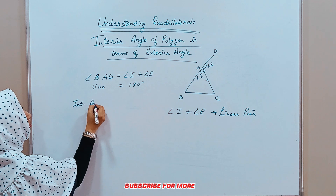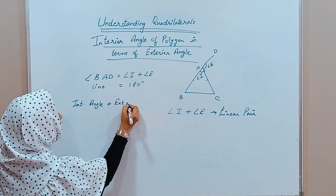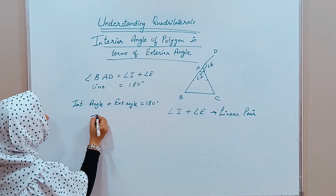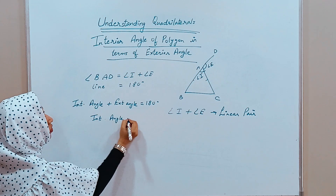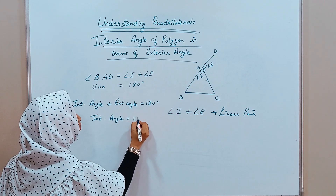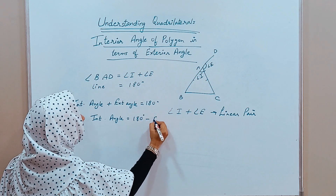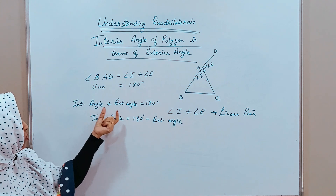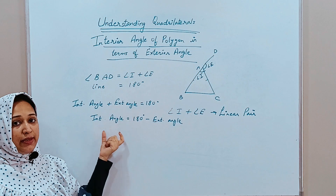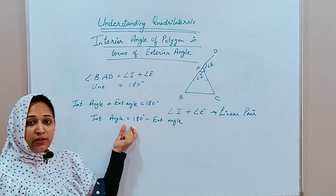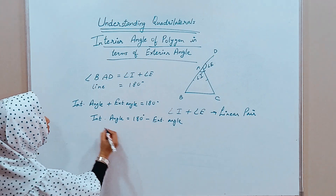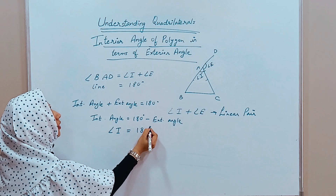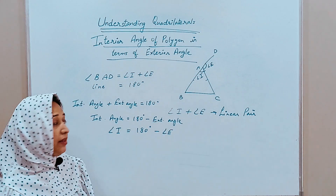So we can say that angle I plus angle E equals 180 degrees, which means angle E equals 180 degrees. Now if we want to find the value of the interior angle in terms of the exterior angle, we can say that interior angle equals 180 minus exterior angle. Why minus? Because according to the rule, when you move any number from one side to the other across the equals sign, the sign changes — so plus becomes minus. So angle I equals 180 degrees minus angle E.